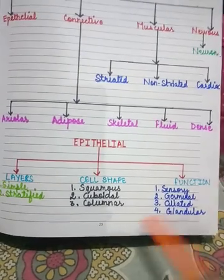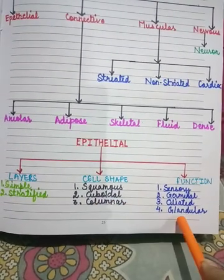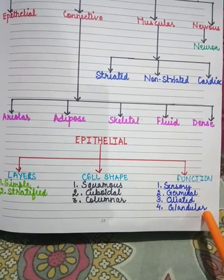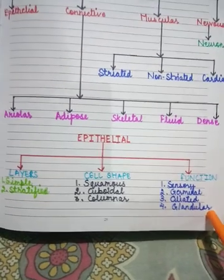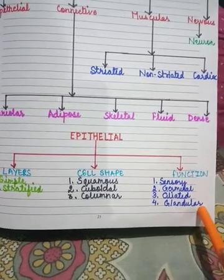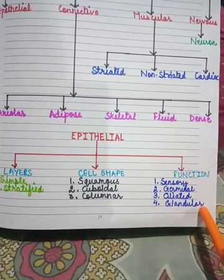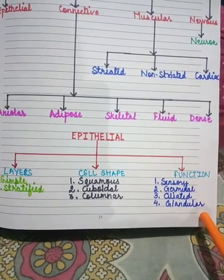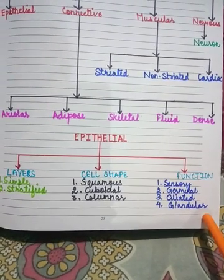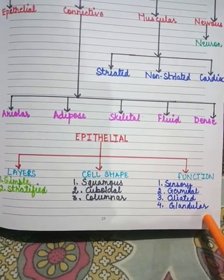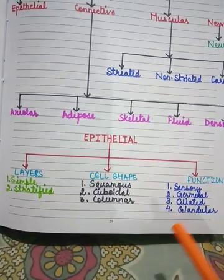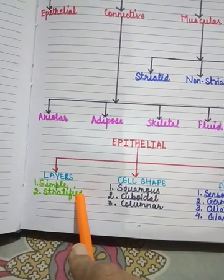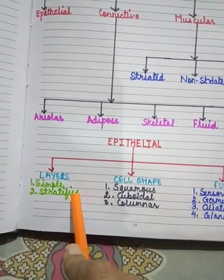The second type under columnar epithelium is glandular epithelium. These are made up of large cells that secrete chemical substances. They are found in sweat glands, tear glands, and also in the liver. The last type is stratified epithelial tissue, which is found all over the skin and the cornea.